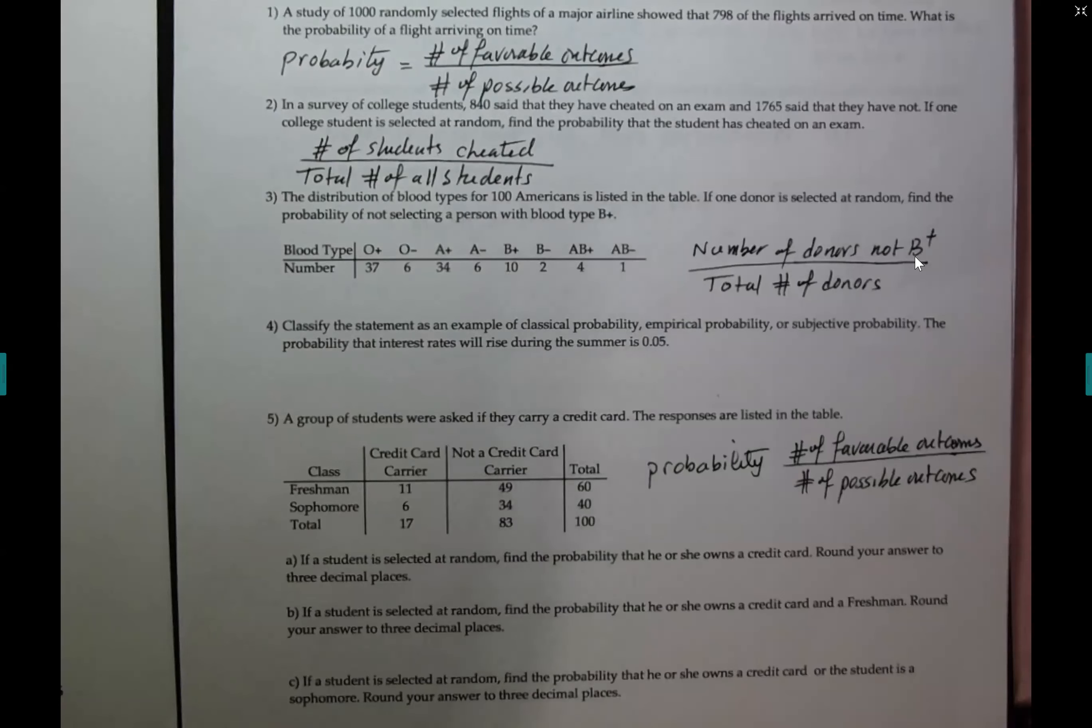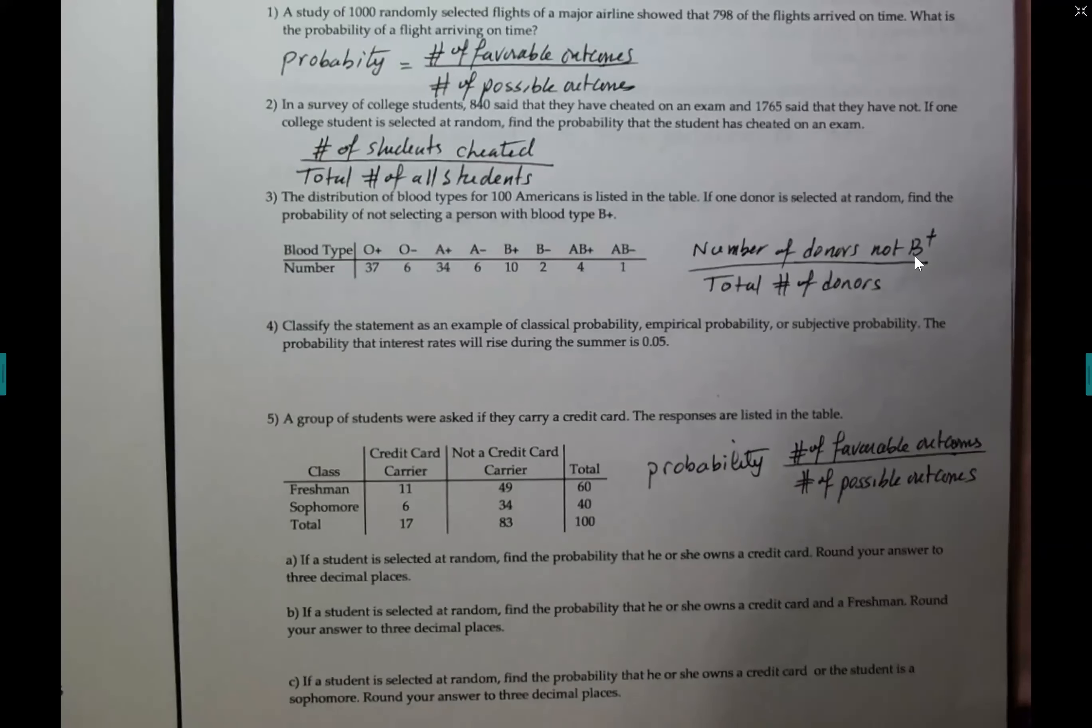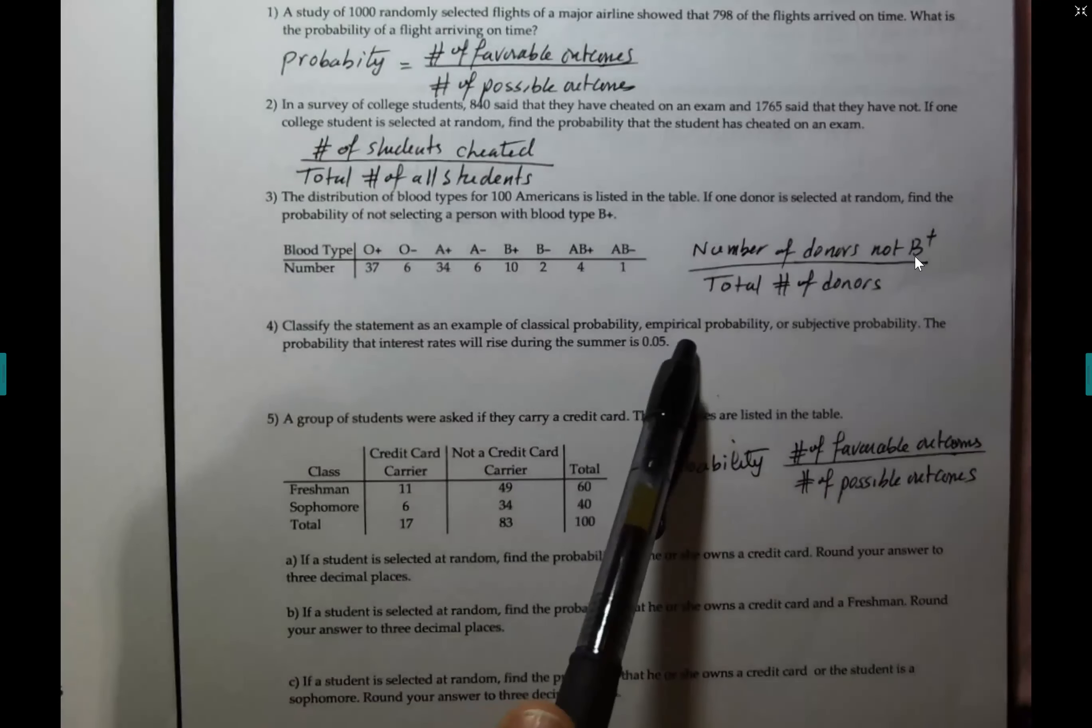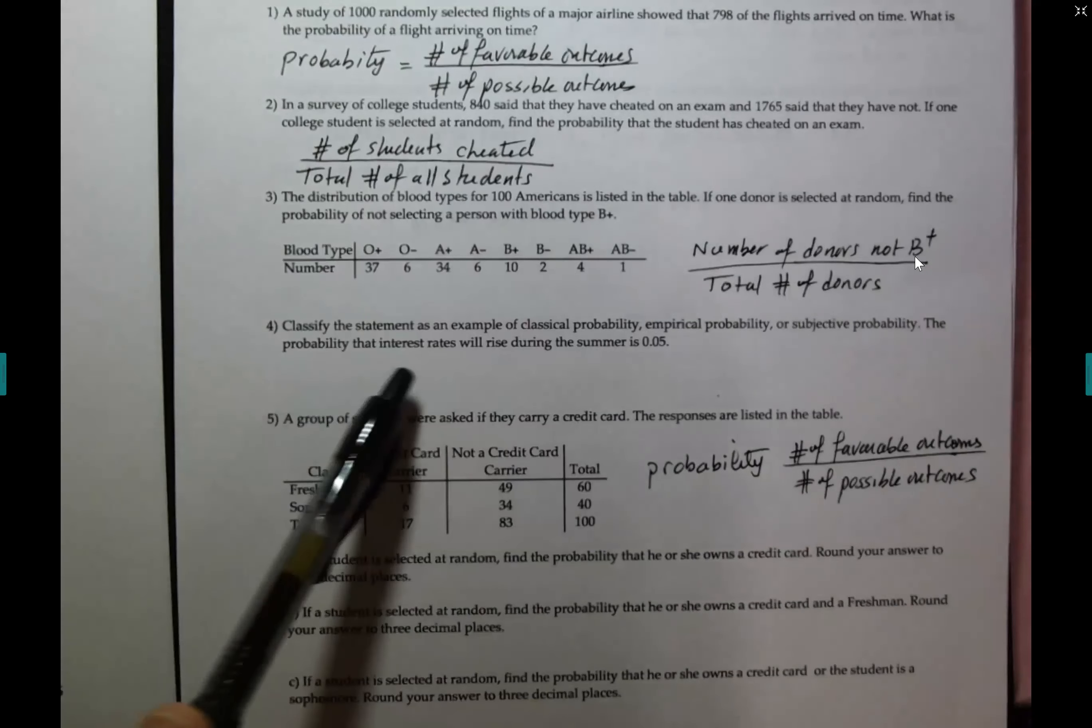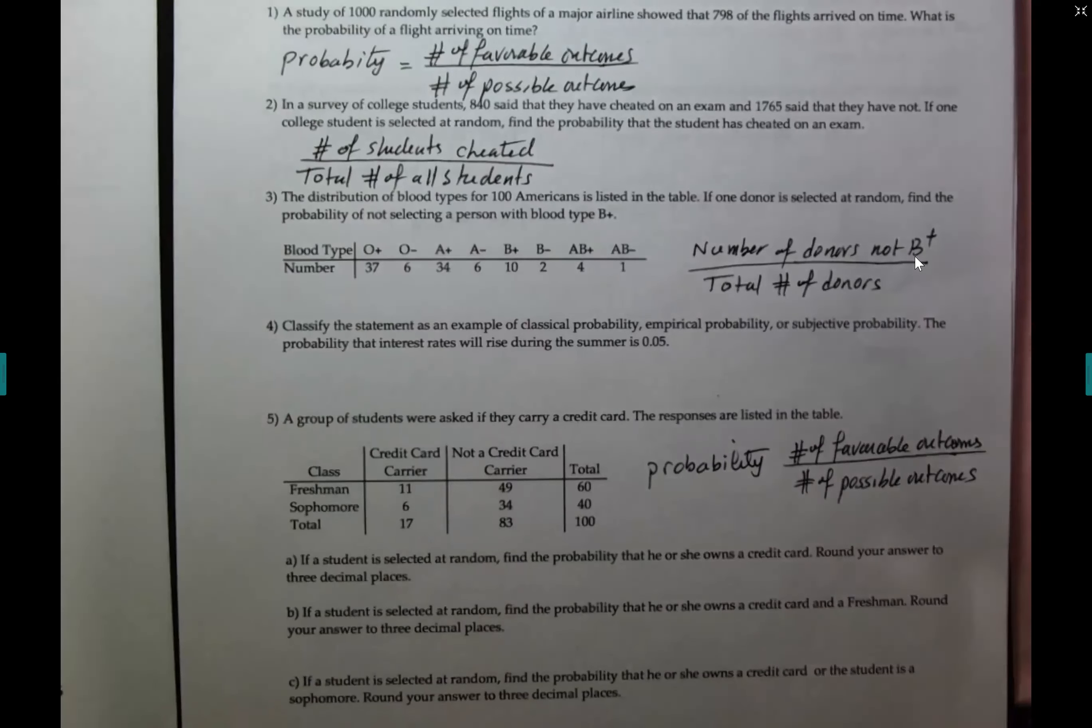Classify the statement as an example of classical, empirical, or subjective. If it's not based on fact or an experiment, it is a subjective probability. If I say roll a die and get a six, what's the probability of getting a six? That's not subjective. That's not intuition. I know my chance is one out of six. But if it is a guess, an educated guess, it is subjective probability. If it is based on a table, like a frequency distribution table, it's called empirical probability. So I'll let you decide. Here someone is predicting, making a prediction. That's a good hint for you that the interest rate will rise during the summer.